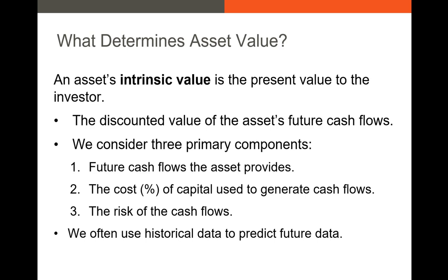If we're buying a really risky asset, that discount rate needs to proxy for the risk of the asset. So a high-risk emerging market stock is going to have a high discount rate, while something like Apple will have a lower discount rate. We often adjust our discount rate upward if we think our cash flow risk is very high. Ultimately, the things that determine most assets' value are the free cash flows, the discount rates, and the risk of those cash flows.